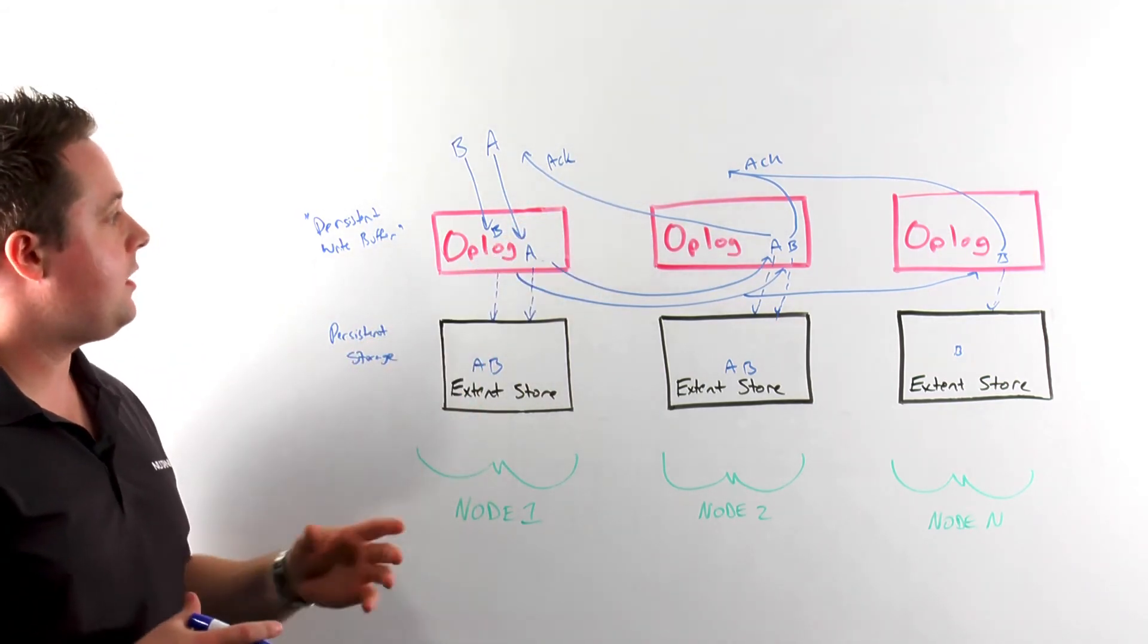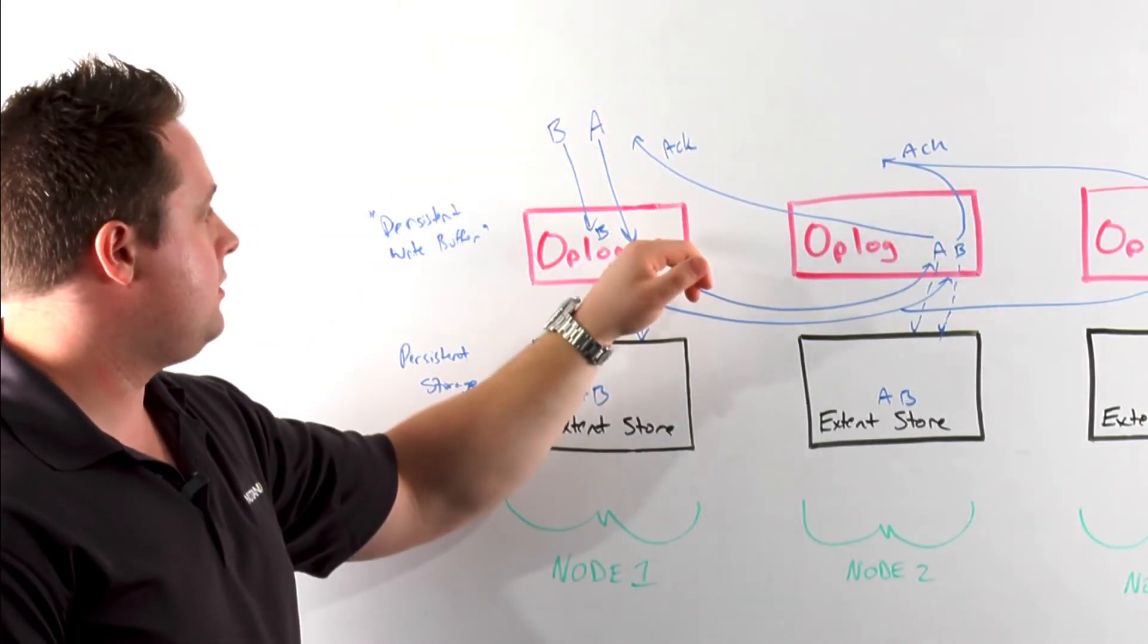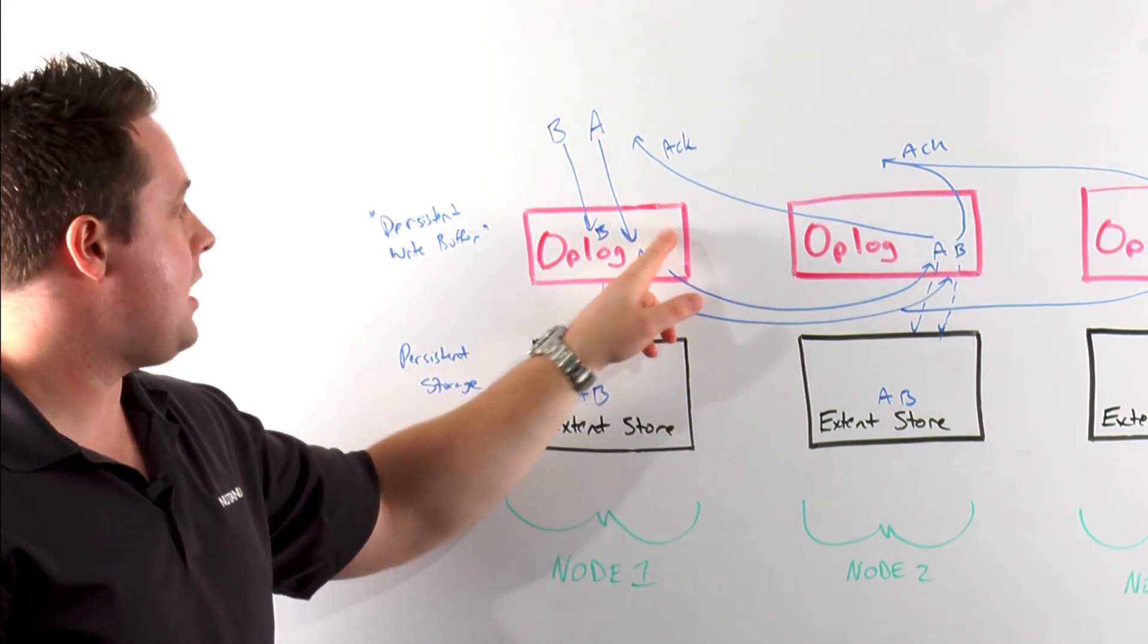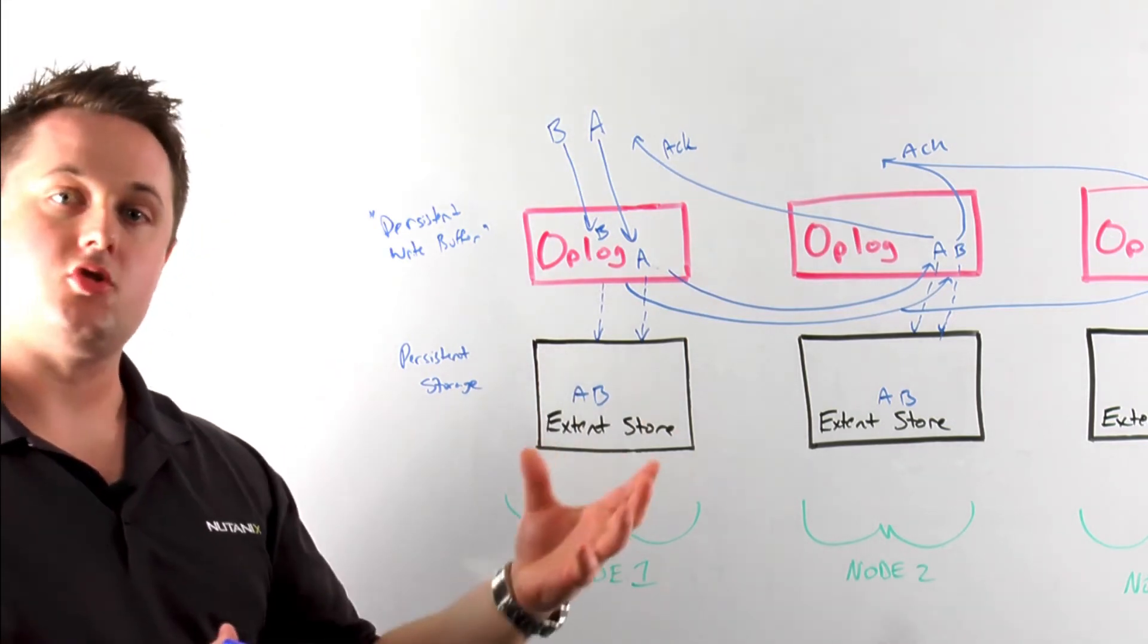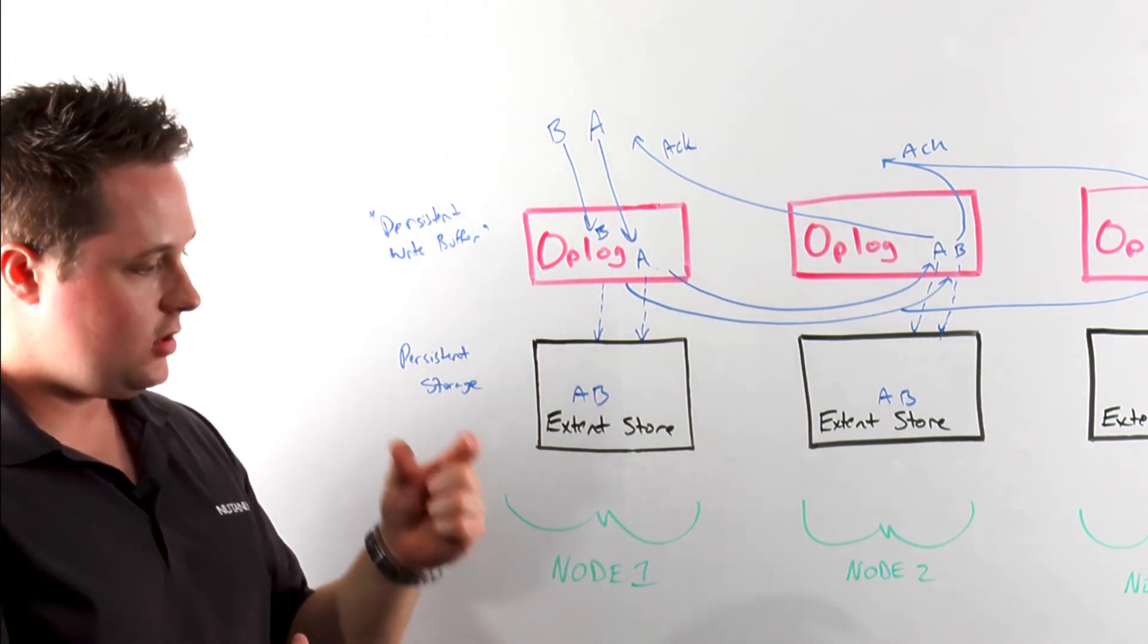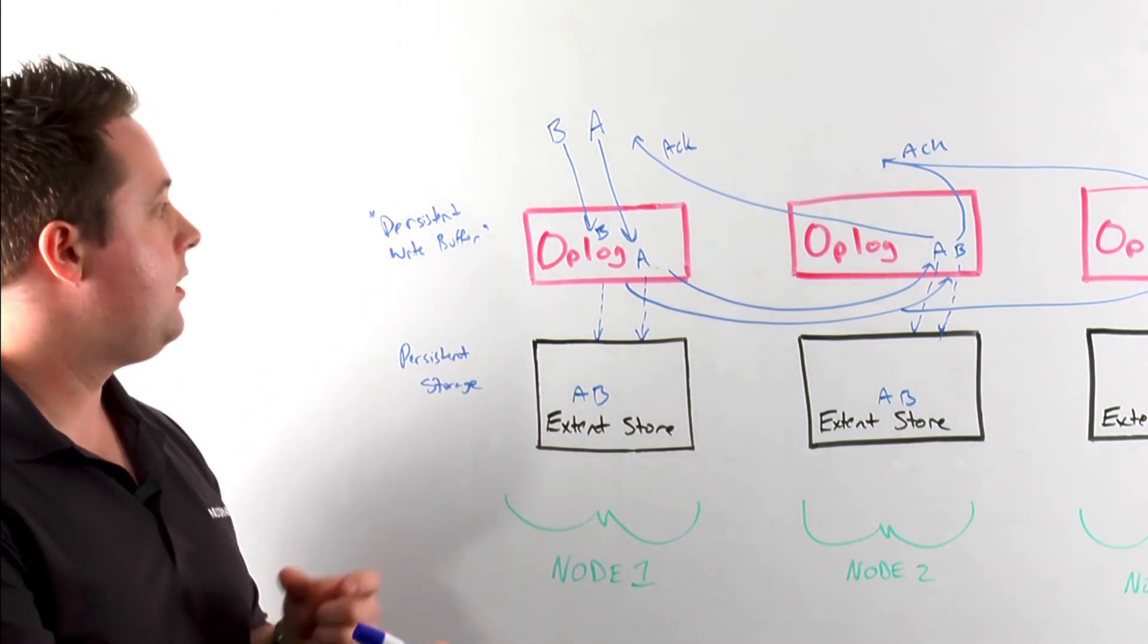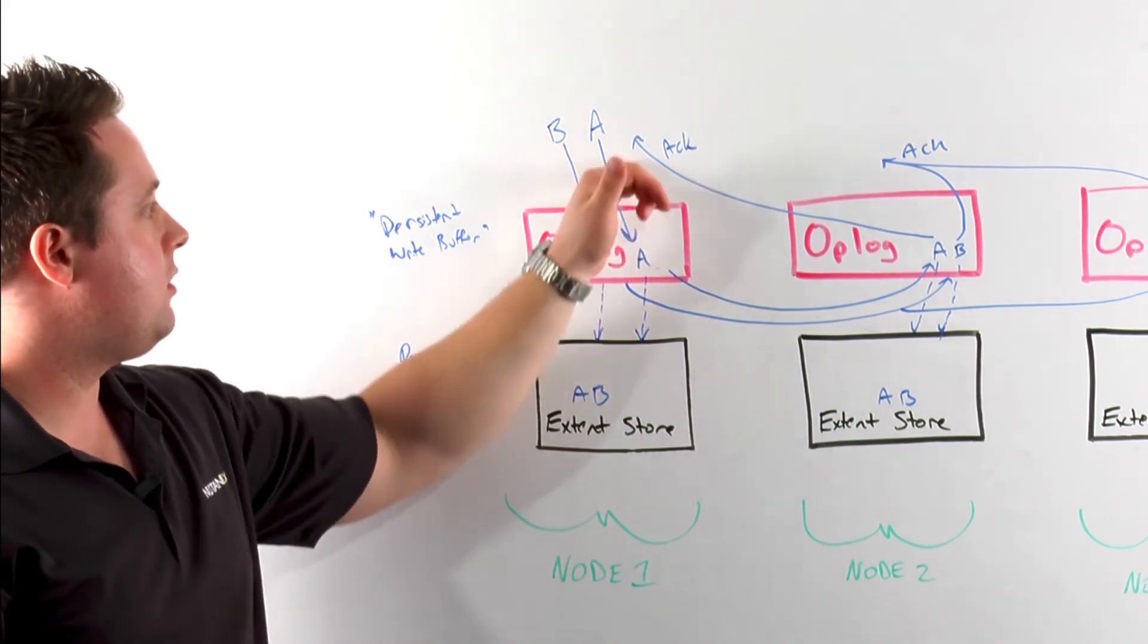And the key thing with that is whenever I read a piece of data, say for example here I wrote data A to node one, and I want to perform a read request for this piece of data, what I'll do is before the read is actually returned to the virtual machine or hypervisor, I'll actually perform a checksum and check that against what is actually stored in the metadata. If it's stored, meaning the data is what I expect it to be, I'll directly return it.